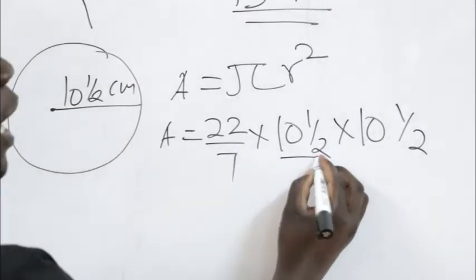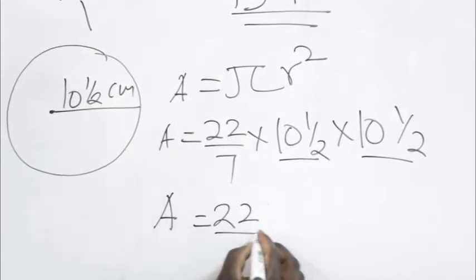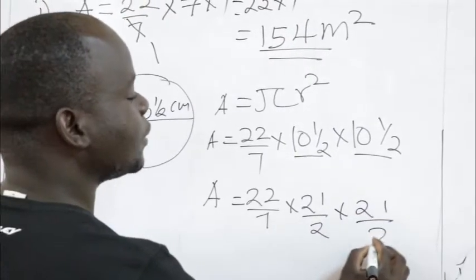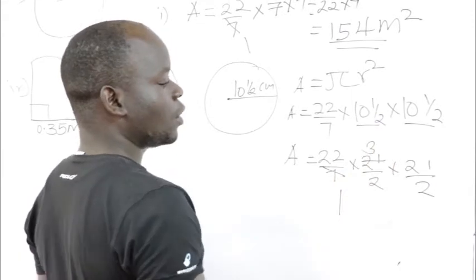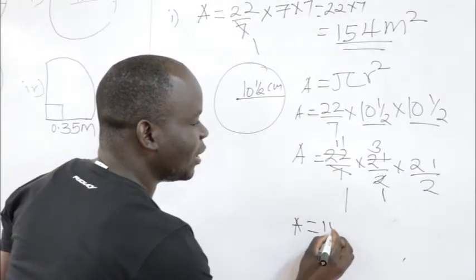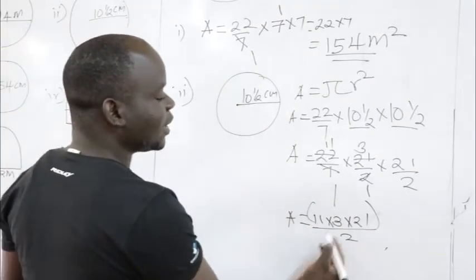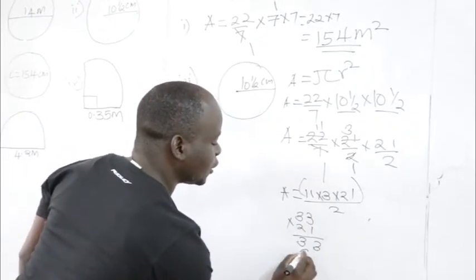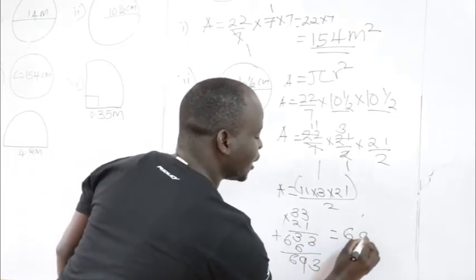Change the mixed number to an improper fraction for easier working. 10½ becomes 21/2. So: Area = 22/7 × 21/2 × 21/2. Cancel: 7 into 21 gives 3, and 2 into 22 gives 11. We are left with 11 × 3 × 21 ÷ 2 = 33 × 21 = 693 divided by 2.